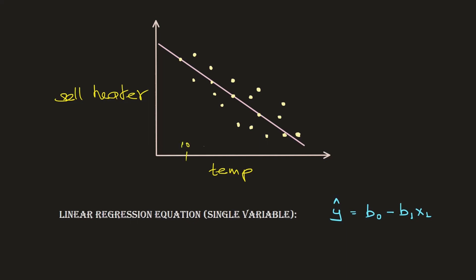Let's consider the independent variable as temperature and the dependent variable as cell quantity of heaters or geysers, which people mostly use in winters. Logically, if the temperature is increasing from 10 degrees to 25 degrees to 35 degrees — meaning we are hitting summers — then the sales of heaters will also decrease rather than increase along with the temperature.